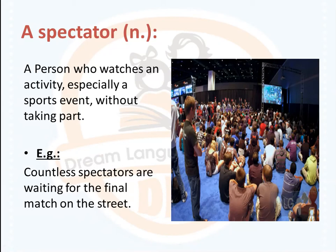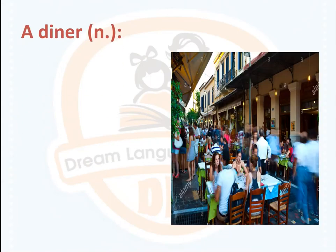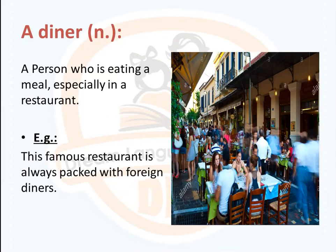Next: 'diner.' A diner is a noun and it means a person who is eating a meal, especially in a restaurant, like the picture. Example: this famous restaurant is always packed with foreign diners.